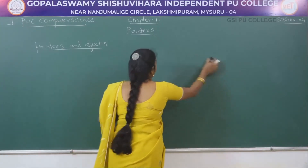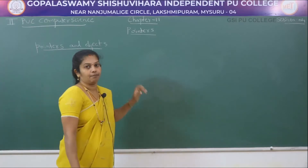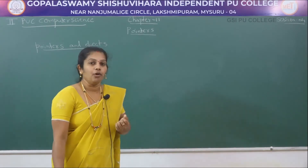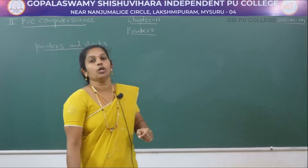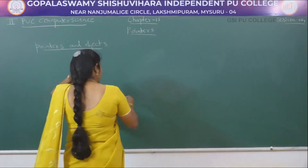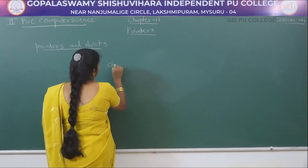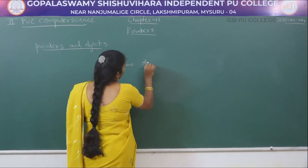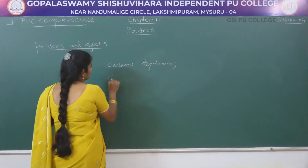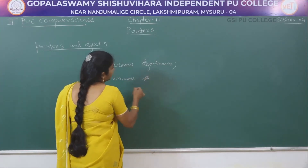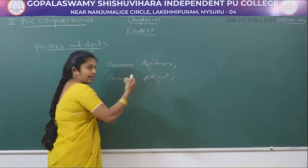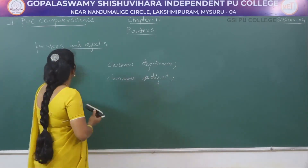Now we will explain regarding pointers and objects. There is a relationship between pointers and objects. A pointer pointing to an object is referred to as a pointer to object. Generally we create an object as: class name followed by object name. Whereas for pointers to objects, the syntax is: class name, star, object name.